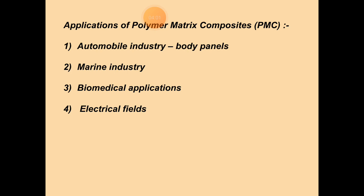The applications of polymer matrix composites include: first, the automotive industry, a very large industry in the corporate sector, in which body panels are made by polymer metal matrix composites. Also, in the marine industry, they are used. Third is biomedical applications, and fourth is the electrical field. An advantage is that the process of softening at elevated temperatures can be reversed to regain properties during cooling, through conventional compressive fabrication techniques.